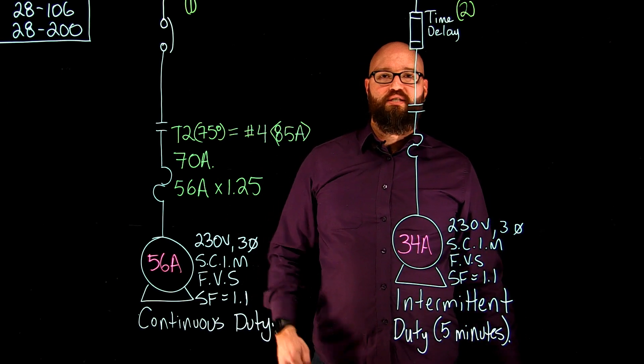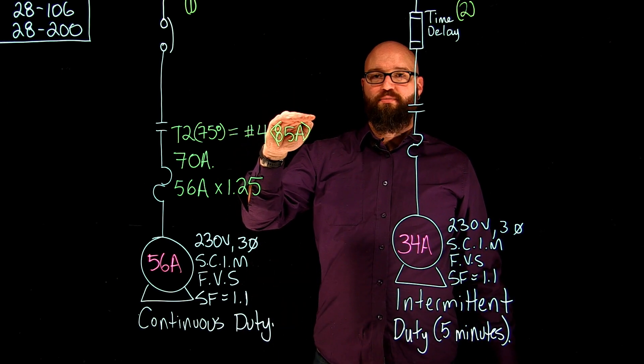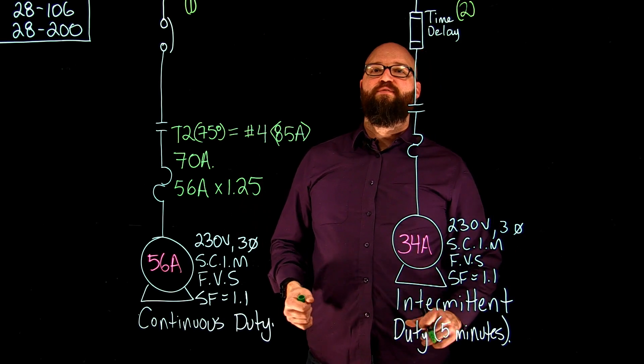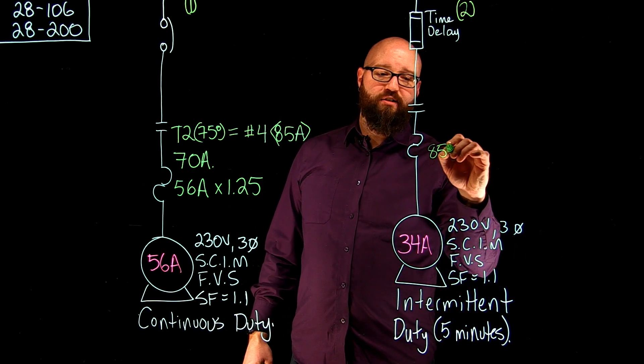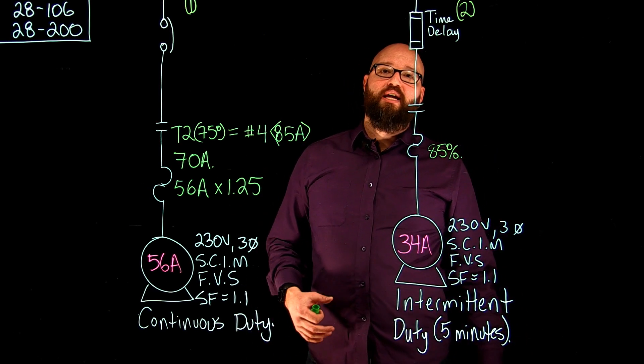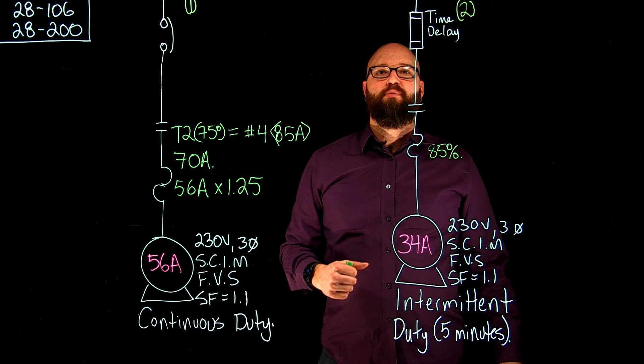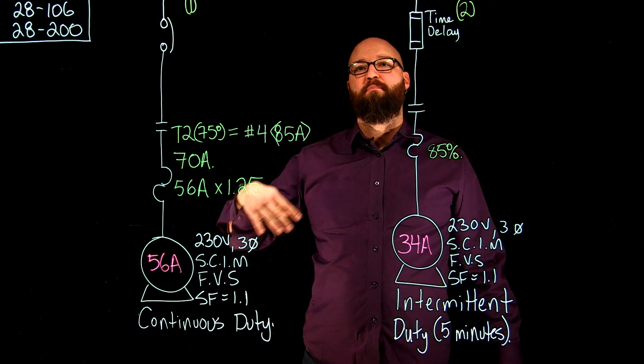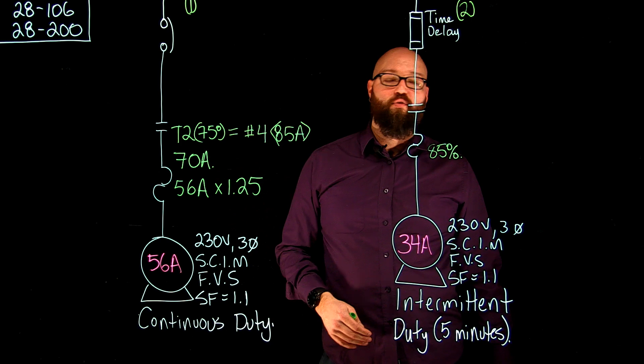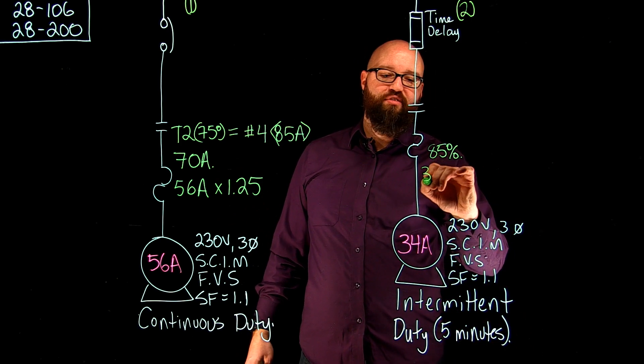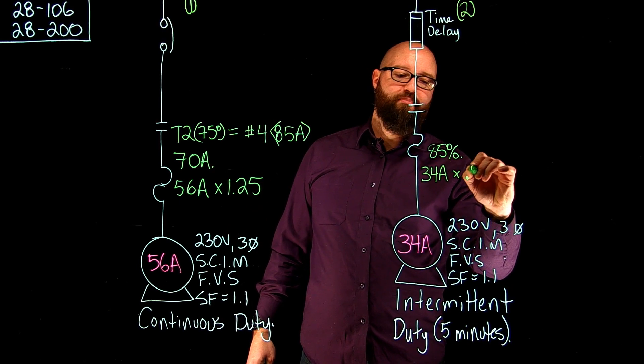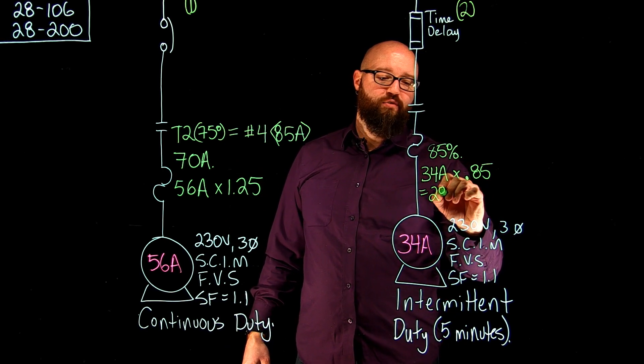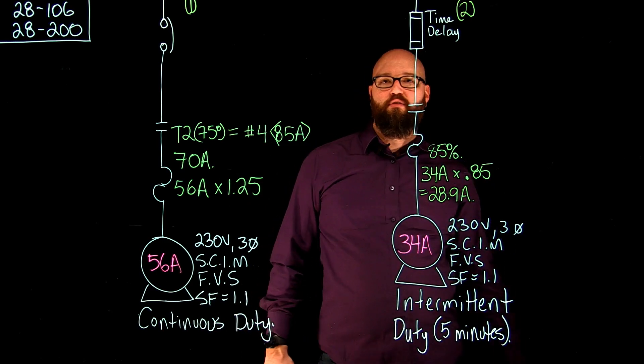So if we check out table 27, we're going to go down until we find intermittent duty. And then we're going to go across until we find the actual time rating for that intermittent duty. And in this case, intermittent duty with five minutes, we're going to see that it tells me 85%. What that means is I can actually apply an 85% multiplier to my FLA. My continuous duty, my multiplier was 125%. So we ended up going with a bigger branch circuit than the FLA was rated for. In this case, because it's running less, we're going to take our 34 amps and multiply it by that point 85, which is our 85%. And we're going to end up with a minimum capacity in this case of 28.9 amps, which is actually smaller than the FLA, but that's okay.